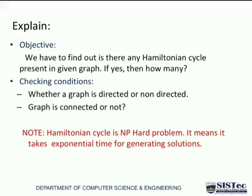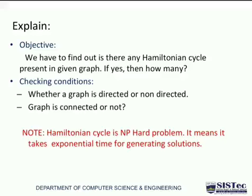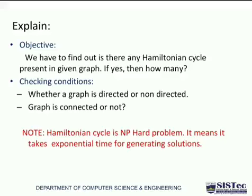Important notice: Hamiltonian cycle is an NP-hard problem. On the basis of execution time, we have divided problems into two different classes — either NP-hard or NP-complete. Any problem which is going to be solved in polynomial time will come under the NP-complete class, and a problem which is going to be solved in exponential time will come under the NP-hard class. Hamiltonian cycle has exponential execution time, that's why it falls into the NP-hard class.